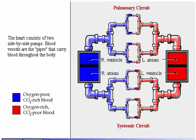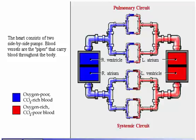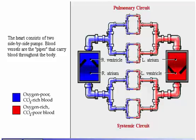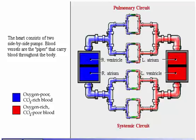In the lungs, the blood receives oxygen, eliminates carbon dioxide, and travels back to the left atrium of the heart. From the left atrium, the oxygen-rich, carbon-dioxide-poor blood is pumped out to the body by the left ventricle. When the body has depleted the blood's oxygen, the veins return the blood to the right atrium of the heart, and the cycle continues.